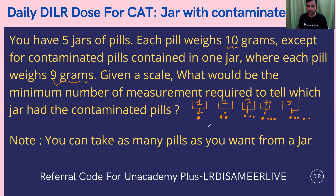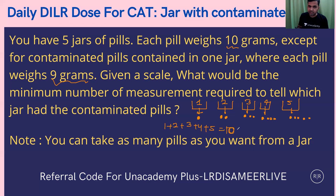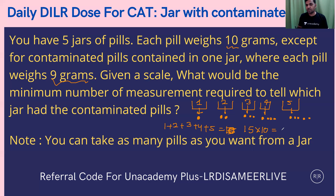The total number of pills I'll be taking would be 1 + 2 + 3 + 4 + 5, which is 15 pills. Now, if I measure them once only — if all of them are non-contaminated pills — the total weight should be equal to 150 grams. The weight of all the pills should be 150 grams.